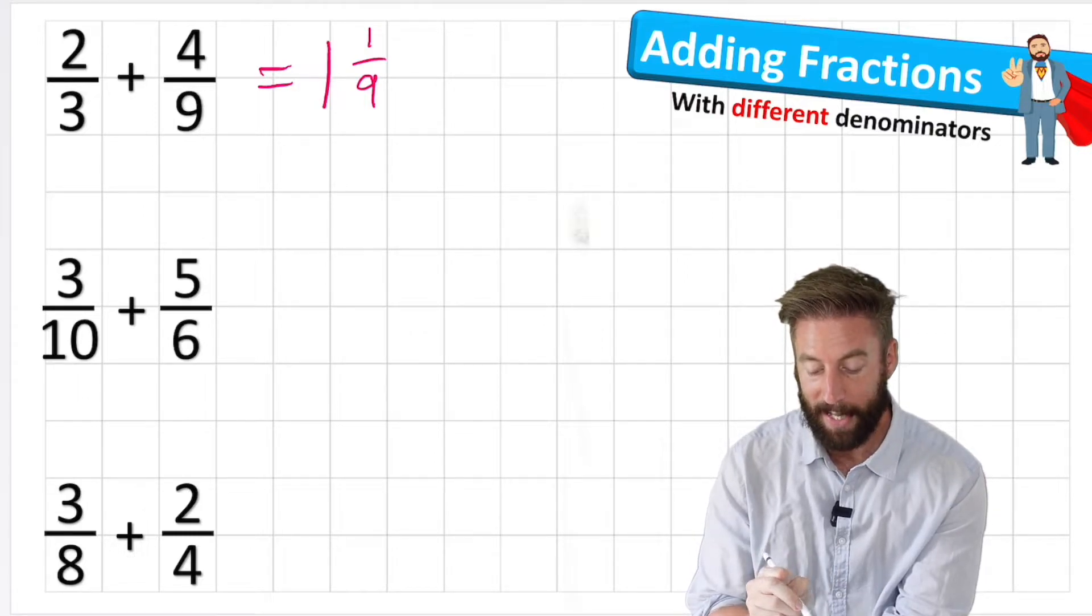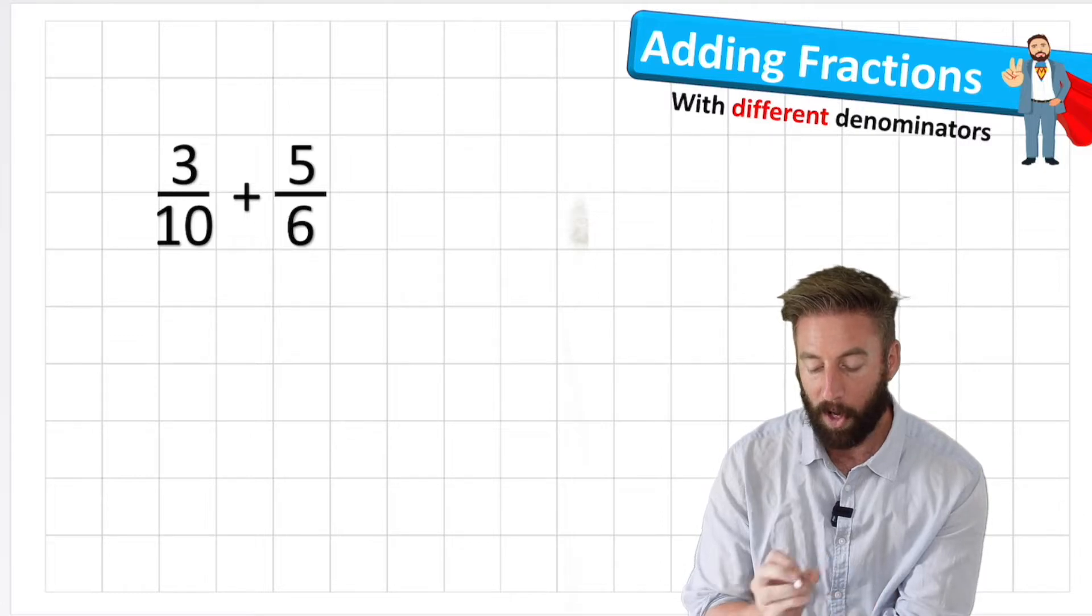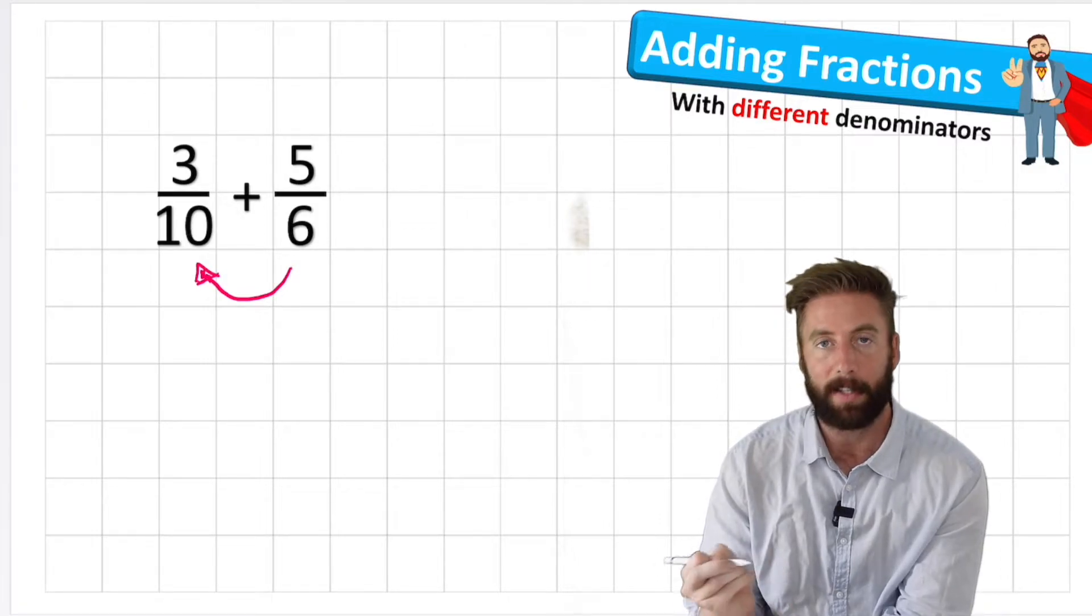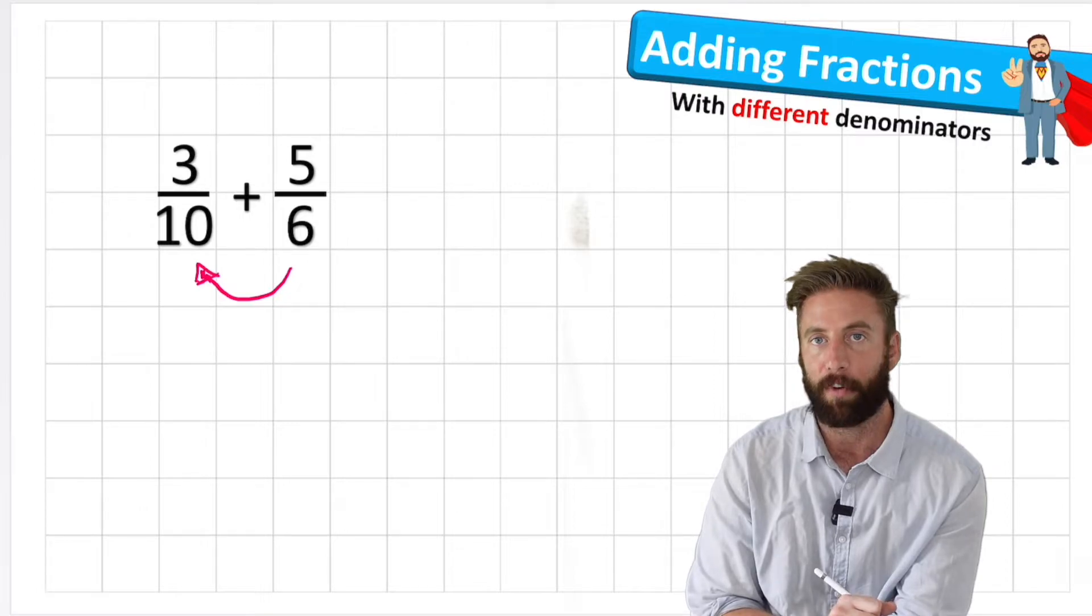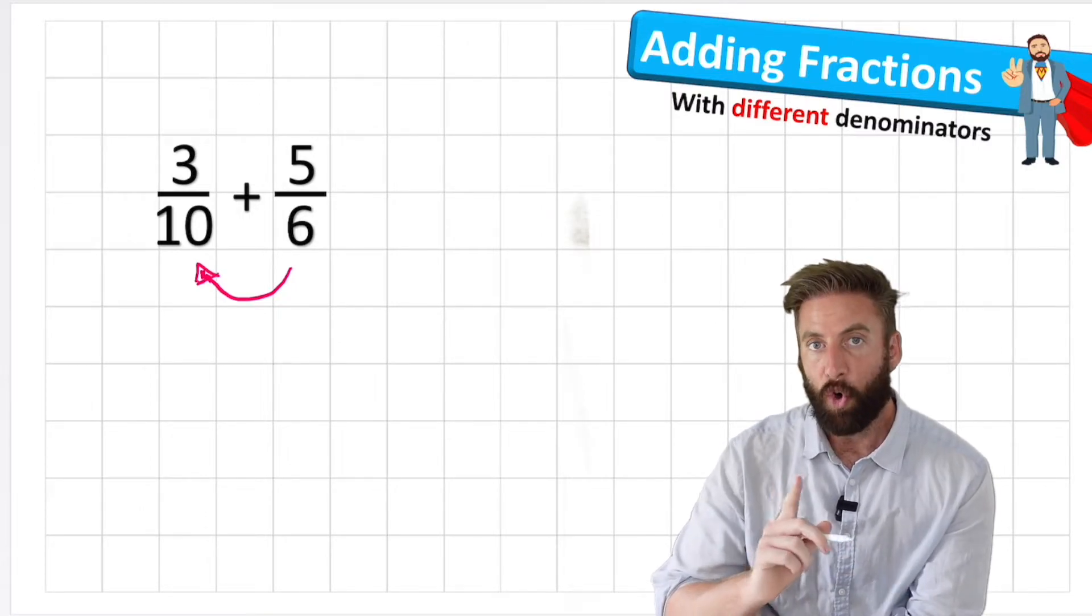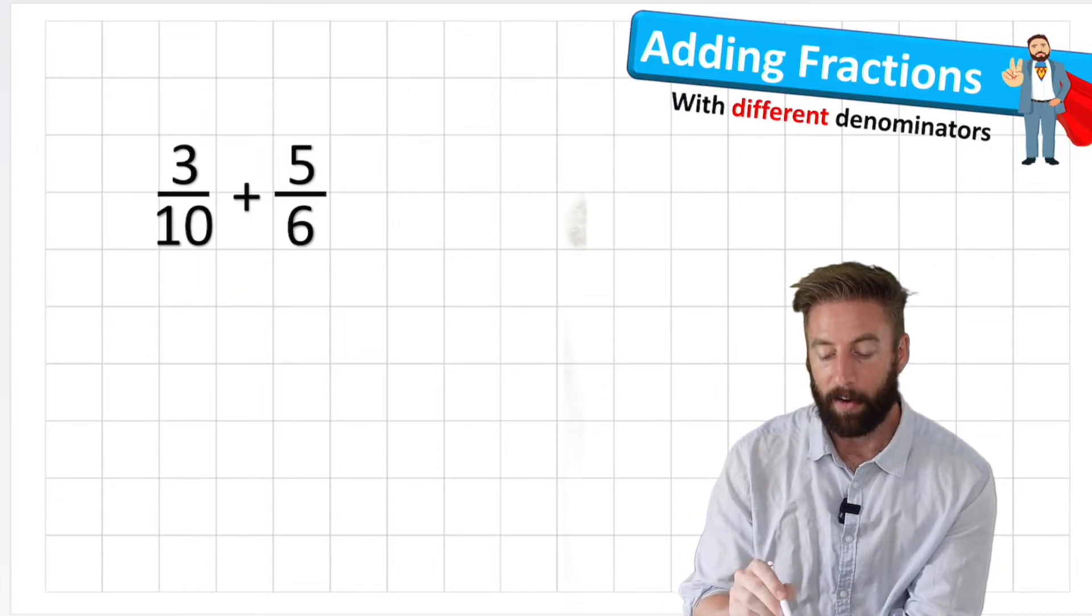Let's have a look at question two: 3/10 add 5/6. Now this question is a little harder because we can't see a direct relationship between our two denominators. 10 is not in the 6 times table and 6 is not in the 10 times table. So we need another method now to help us find an equivalent fraction. I'm going to teach you a little trick and if you saw my equivalent fraction video you'll already know this trick.